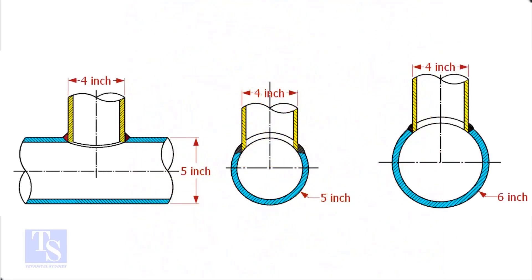In the case of stub-in connections, the branch pipe size is one or more units less than the header size. Suppose both the header and the branch size are the same, a stub-in connection is not possible.